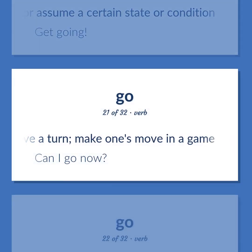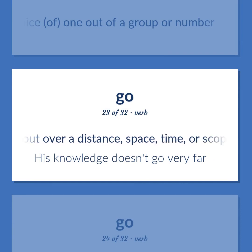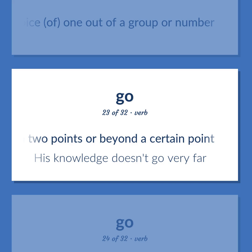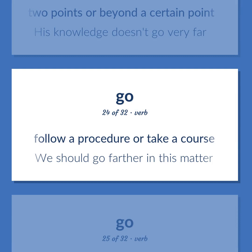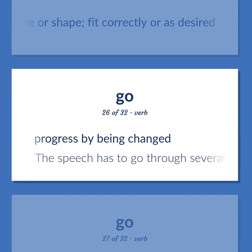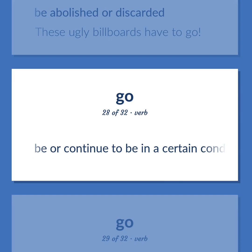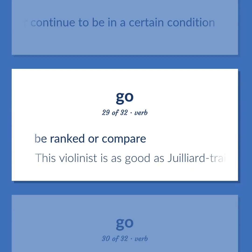Have a turn; make one's move in a game. Can I go now? Give support to, or make a choice of one out of a group or number. Stretch out over a distance, space, time, or scope; run or extend between two points or beyond a certain point. His knowledge doesn't go very far. Follow a procedure or take a course. We should go farther in this matter. Be the right size or shape; fit correctly or as desired. Progress by being changed. The speech has to go through several more drafts. Be abolished or discarded. These ugly billboards have to go. Be or continue to be in a certain condition. Be ranked or compare. This violinist is as good as Juilliard-trained violinists go.